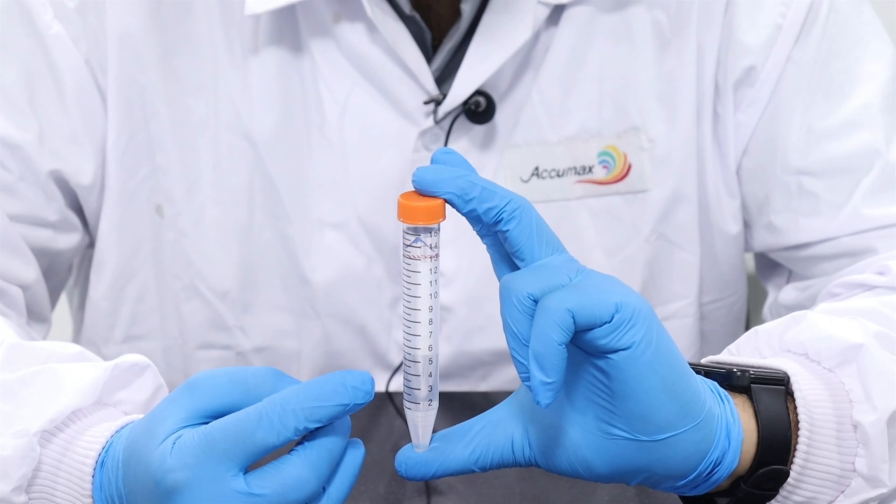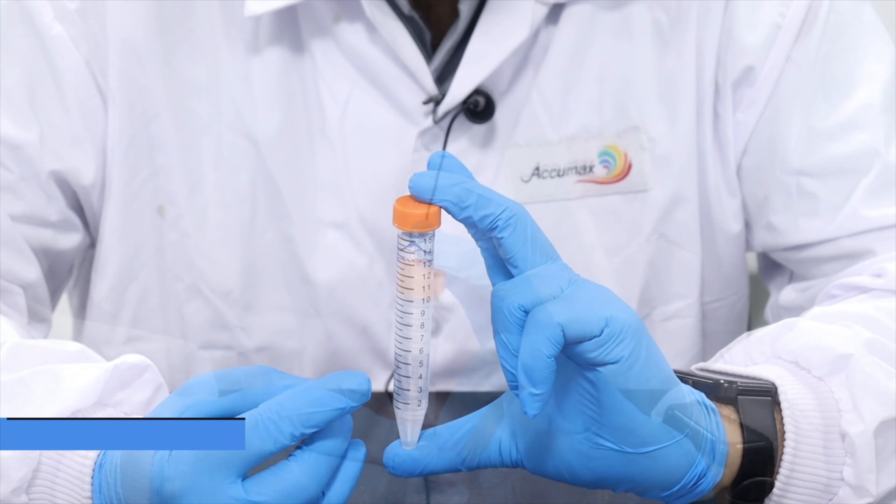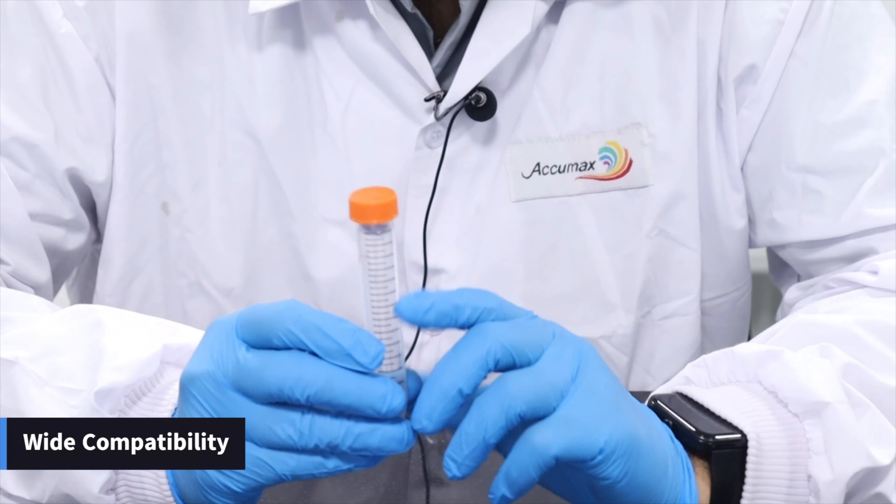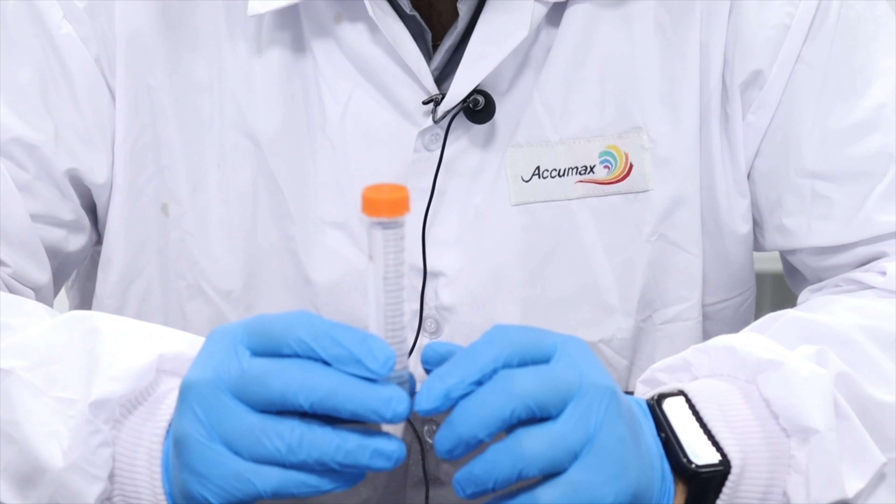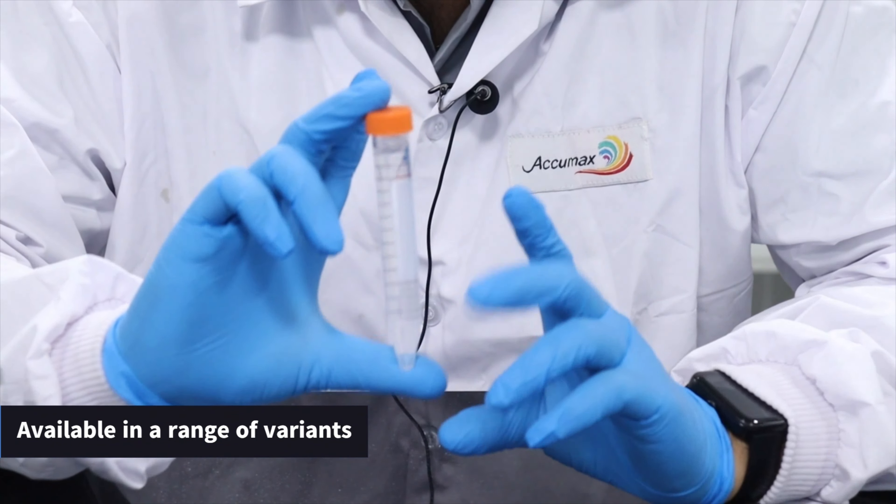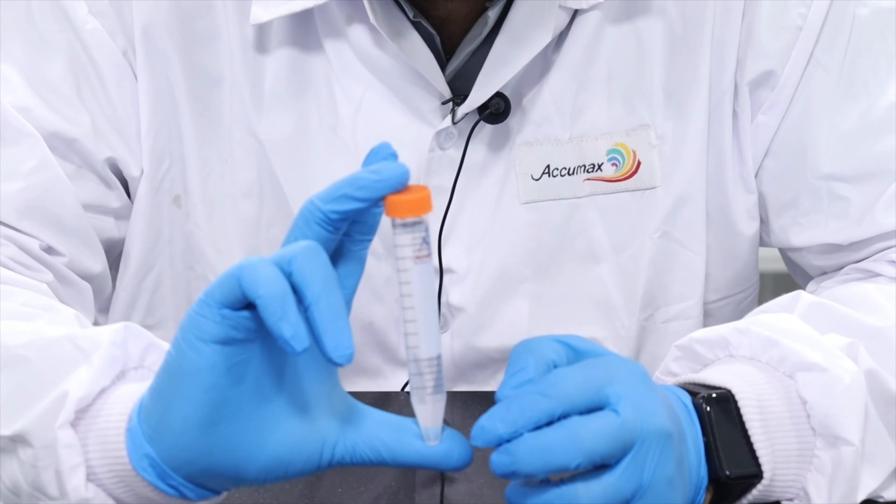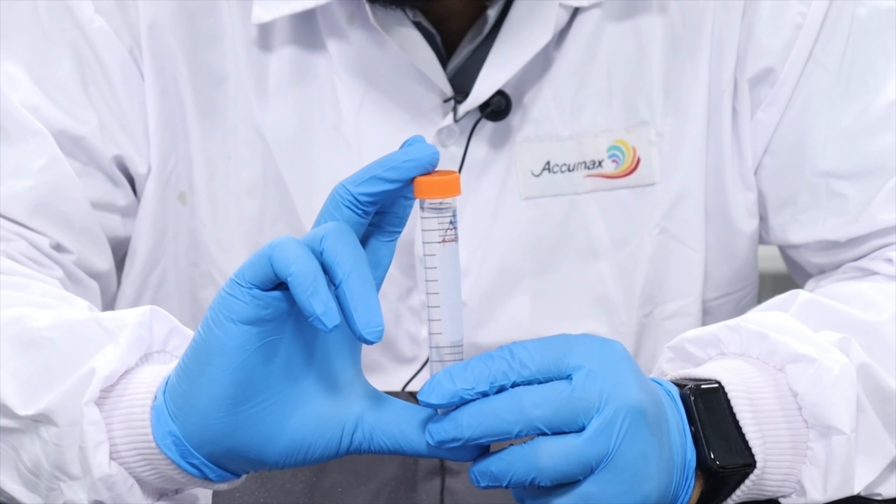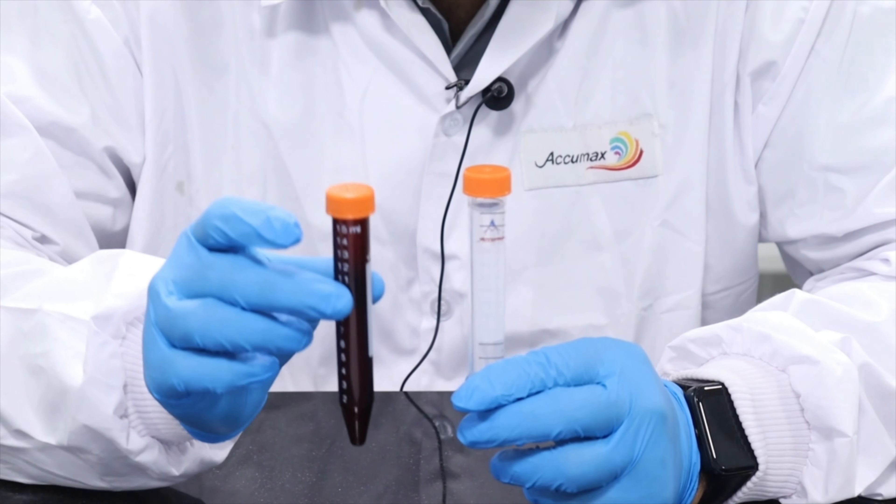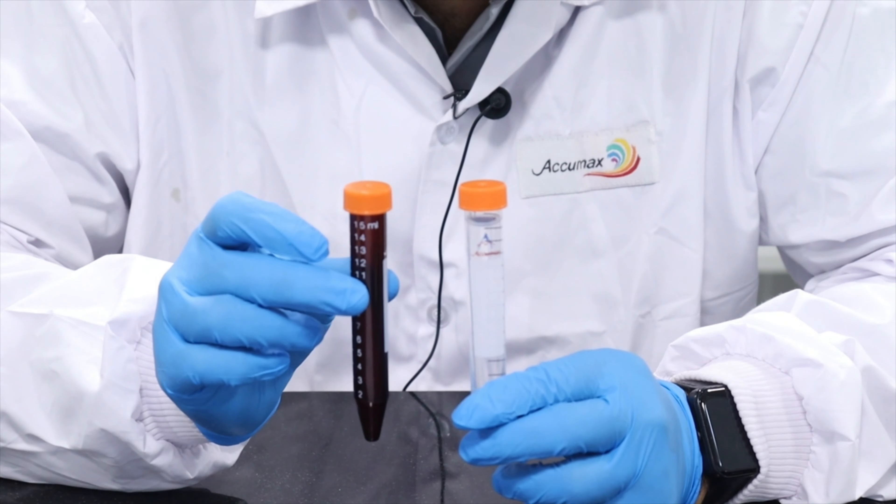As you can see, it is designed with tamper-proof graduations across the centrifuge tube with a marking area and writing area. There's a bigger writing area which facilitates the user to tag and label the centrifuge tube. This area and these graduation marks are resistant to chemical and physical corrosion.